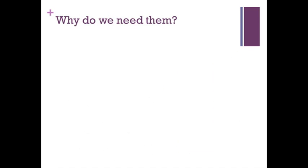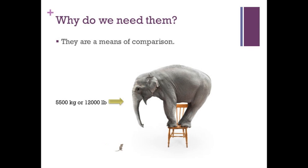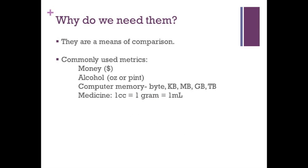So why do we even need metrics? Well, there's a couple of reasons. They are a means of comparison. For example, the size of a house mouse at 15 grams or half an ounce versus an elephant at 5,500 kilograms or 12,000 pounds. There are a variety of different metrics depending on what we are referring to.